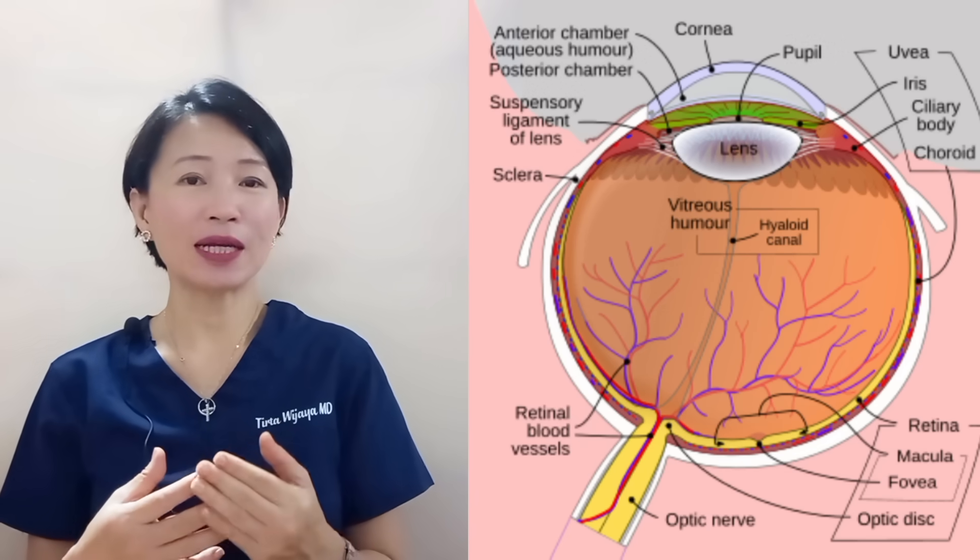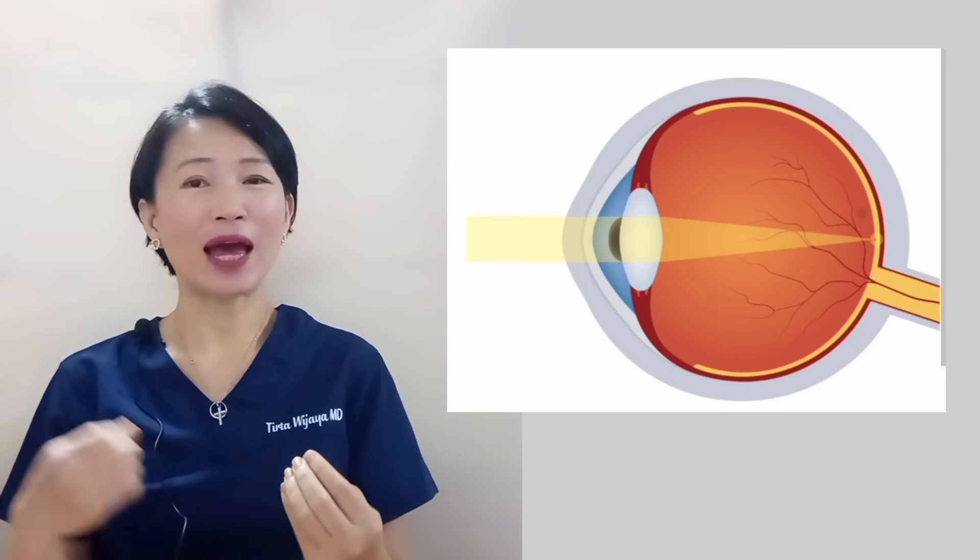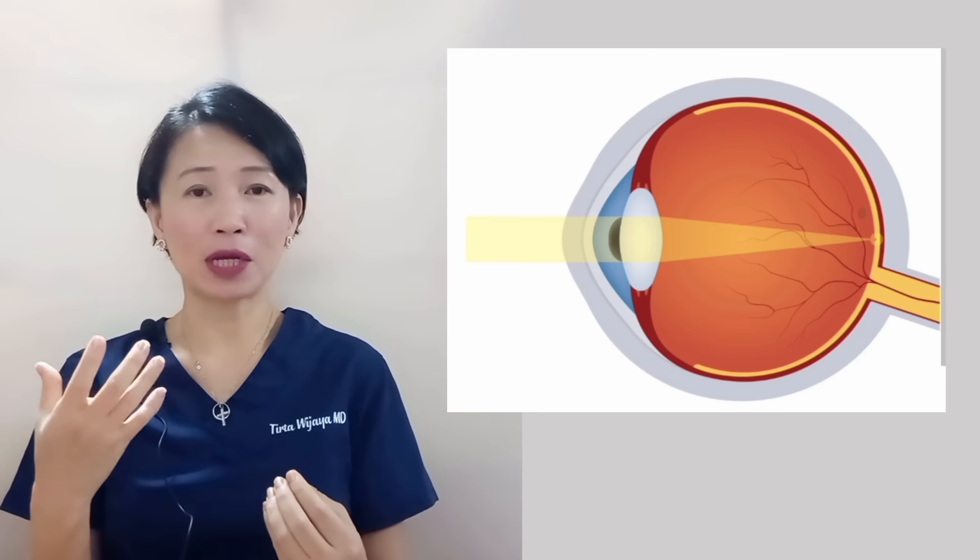Our eyes work in a similar fashion to an analog camera. When we see an object, the light reflected from the object will enter our eyes through the cornea. The iris will relax or contract to dilate or constrict the pupil size to adjust the amount of light entering our eyes, just like a camera shutter. In bright light, the iris contracts, constricting the pupil to reduce the amount of light. In dim light, it is the other way around.